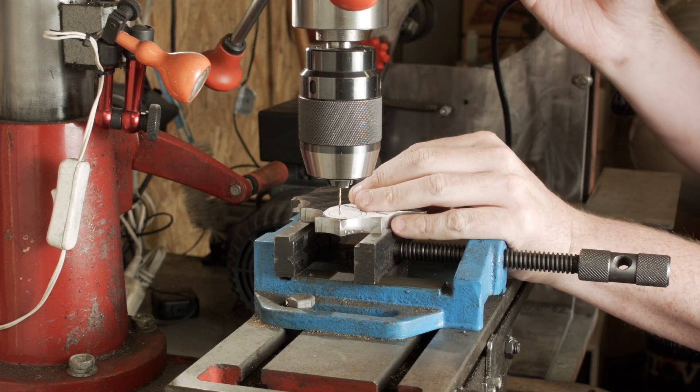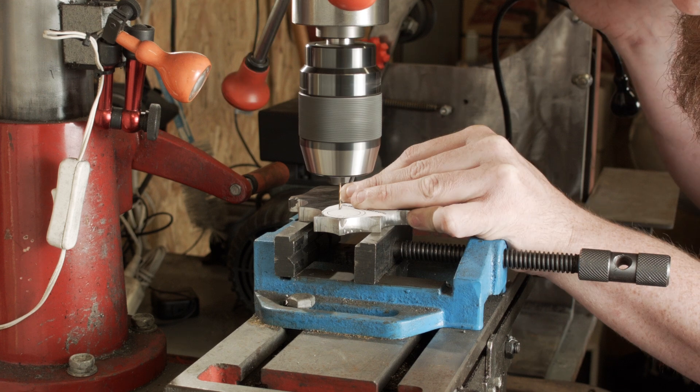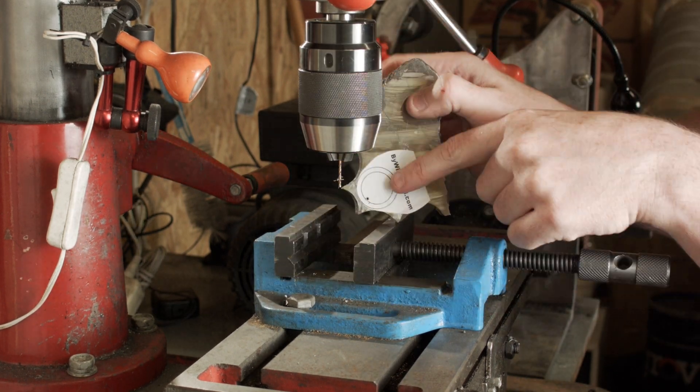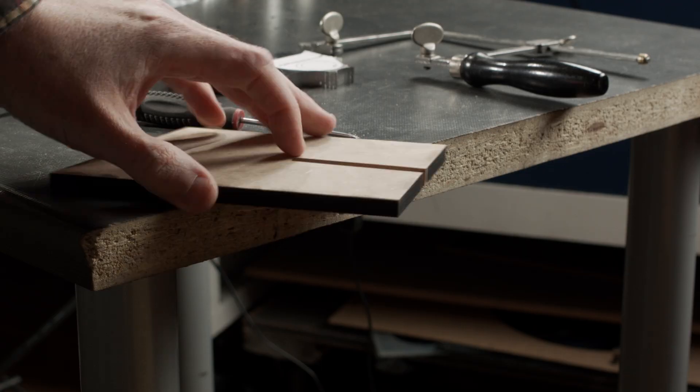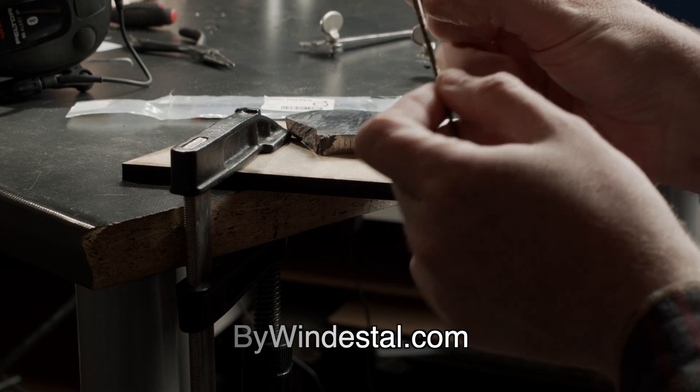For four ice ages, these chunks of metal sat in the ground undisturbed until one day a guy with a shovel and a metal detector found this particular piece. For the past two years I've been making and selling custom rings on my website, made from meteorites from this impact.